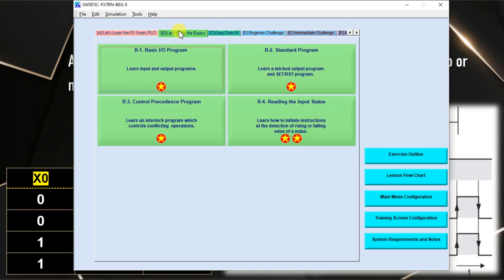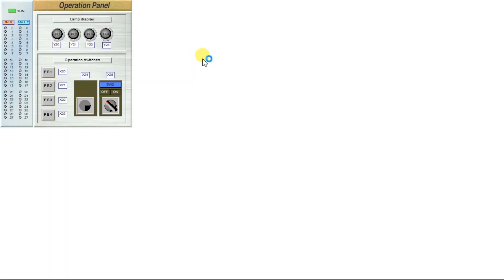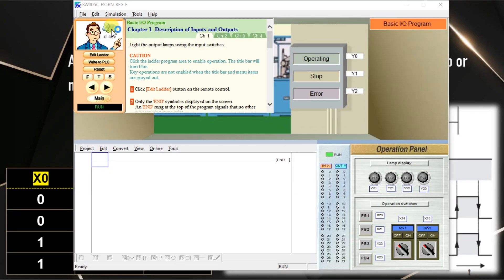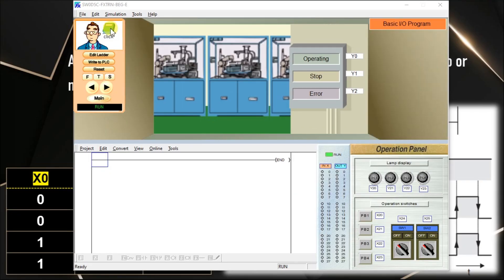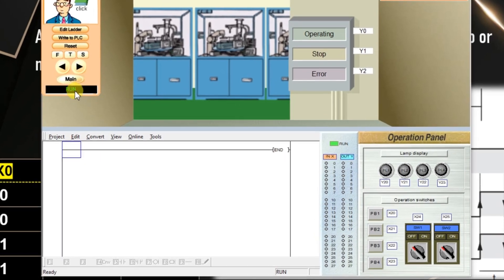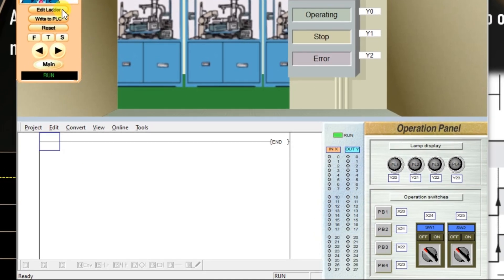For this session I am going to use B section and first section B1. Click on this. Minimize this one. So now we have to enter an AND logic to test our output. PLC is in run mode, so click edit ladder.